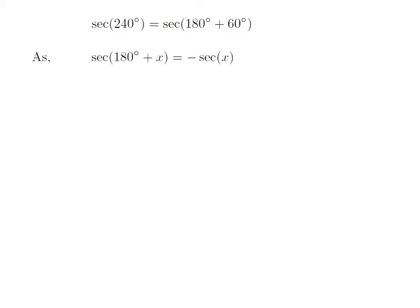As we know, the trigonometry identity secant of 180 degrees plus x is equal to minus secant of x.